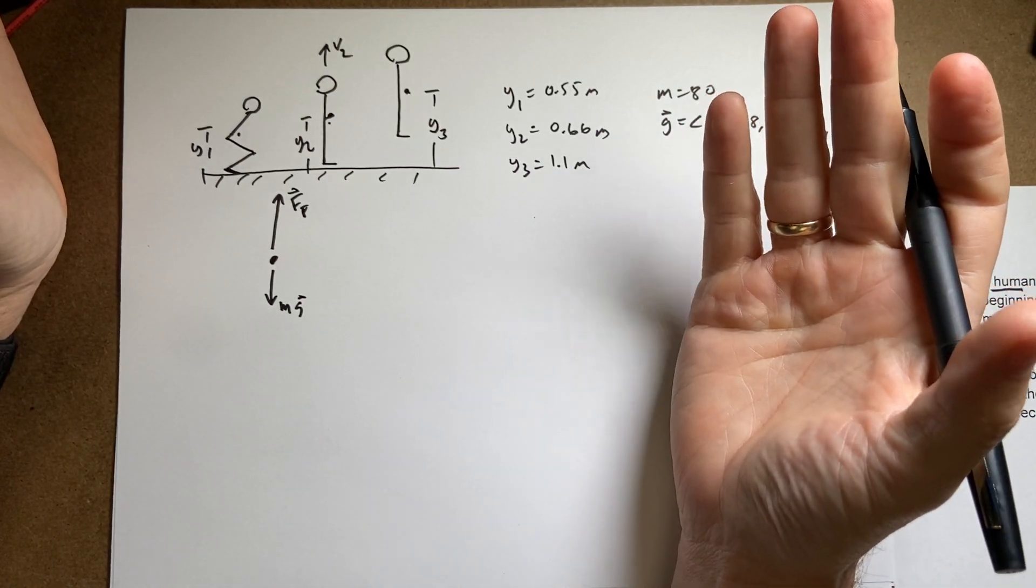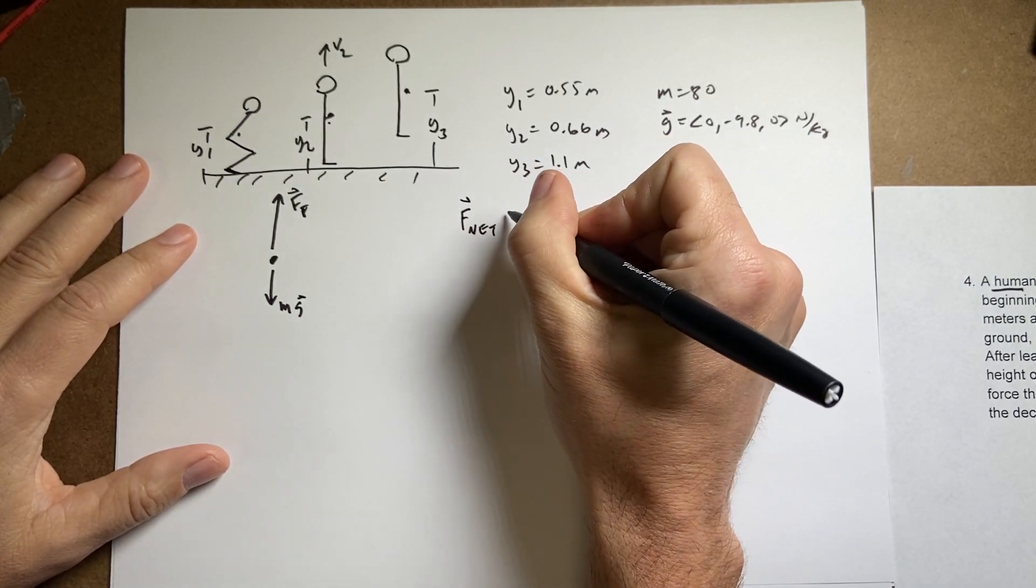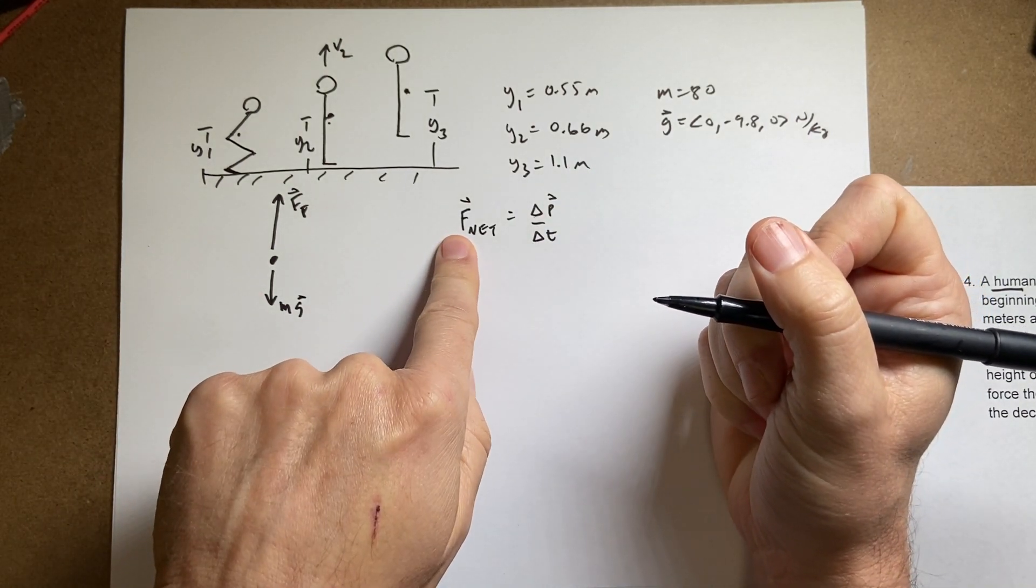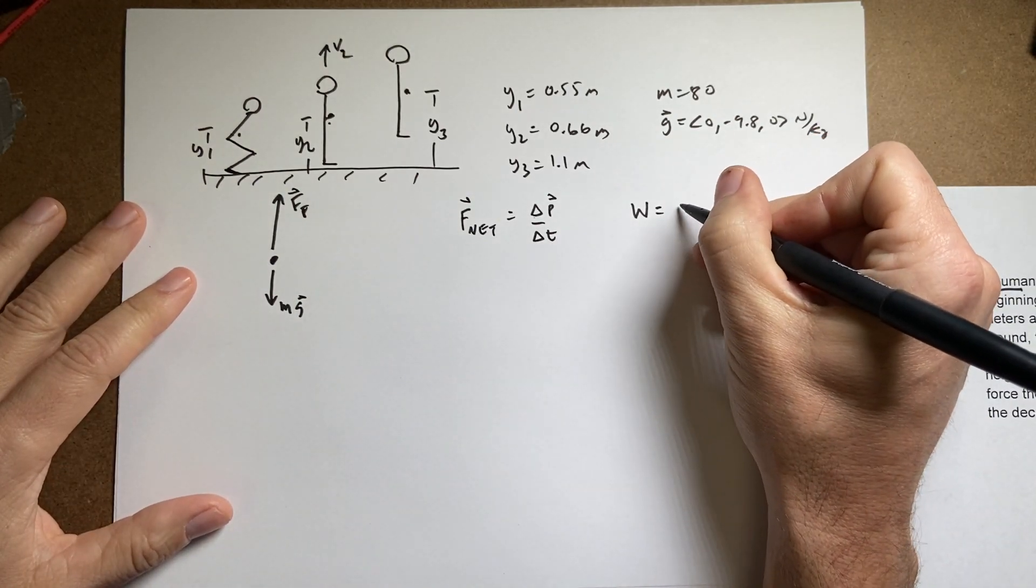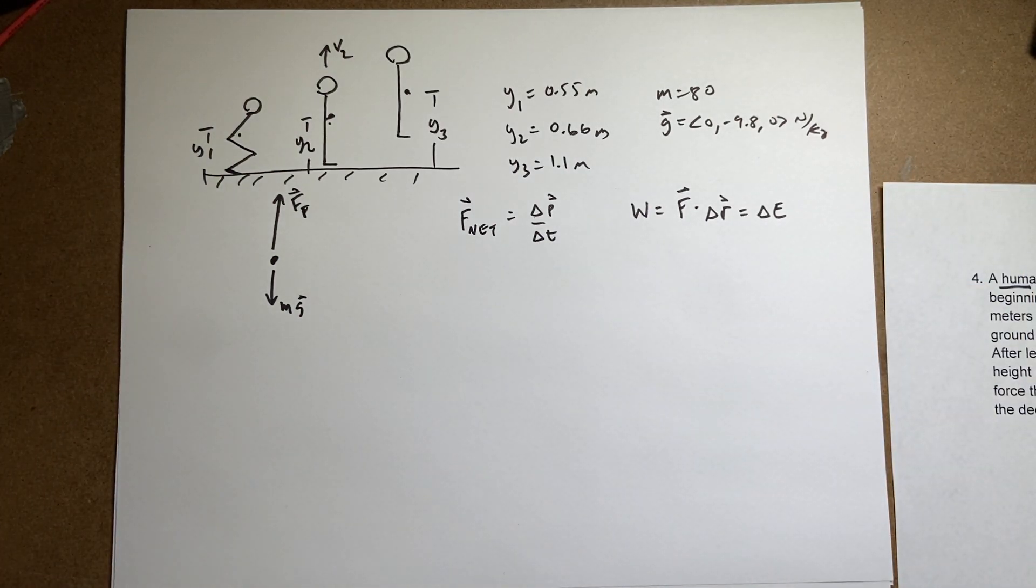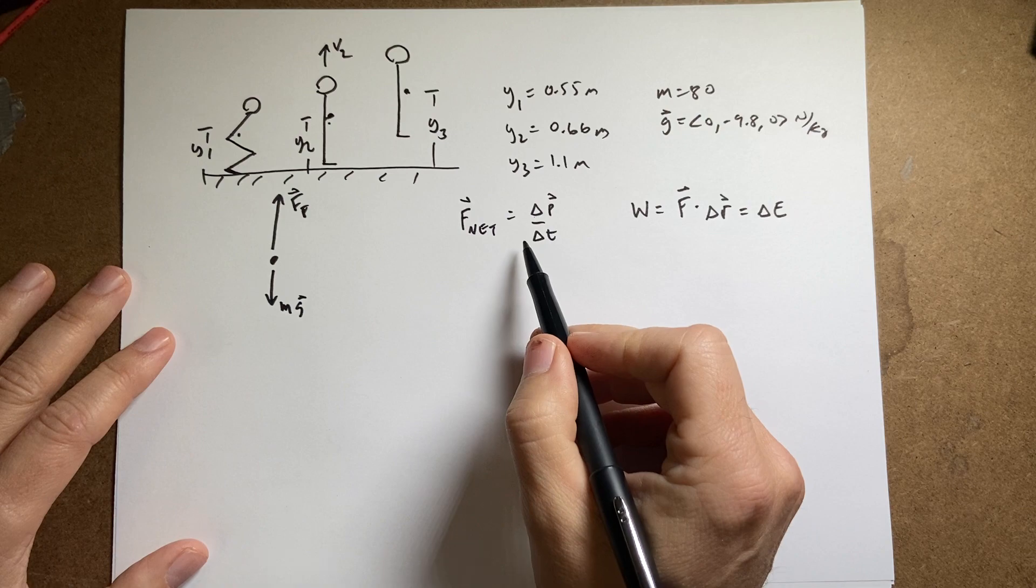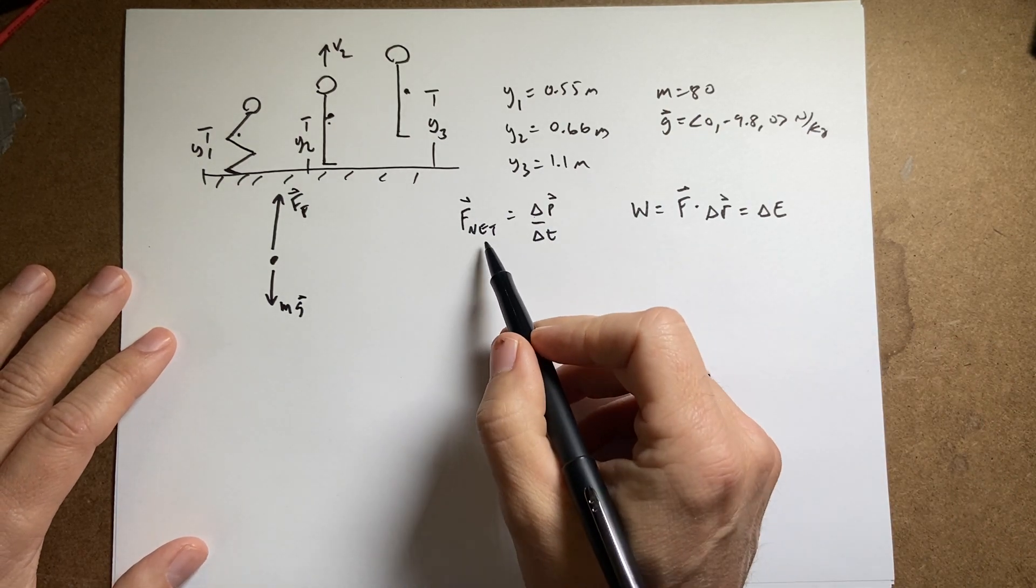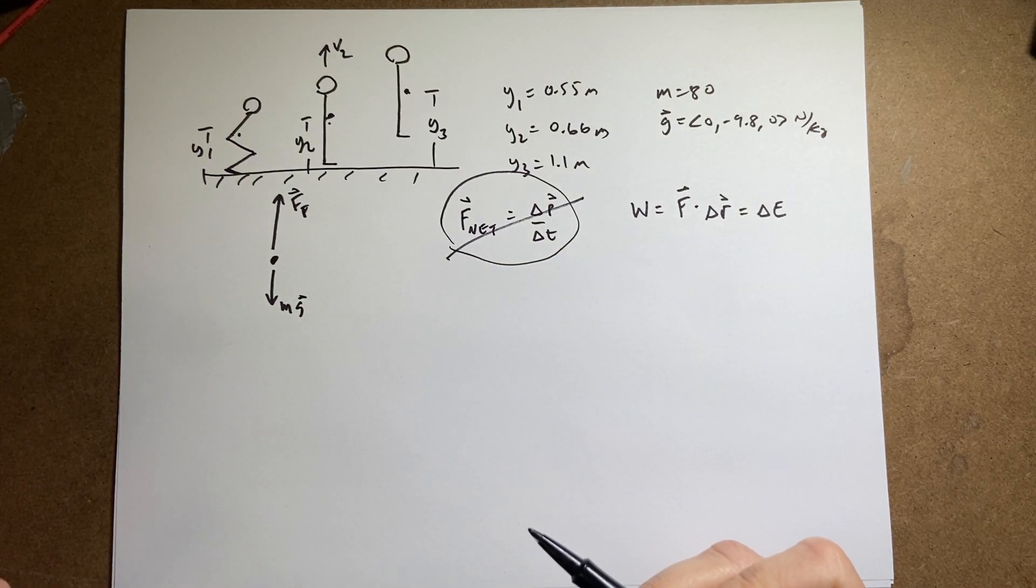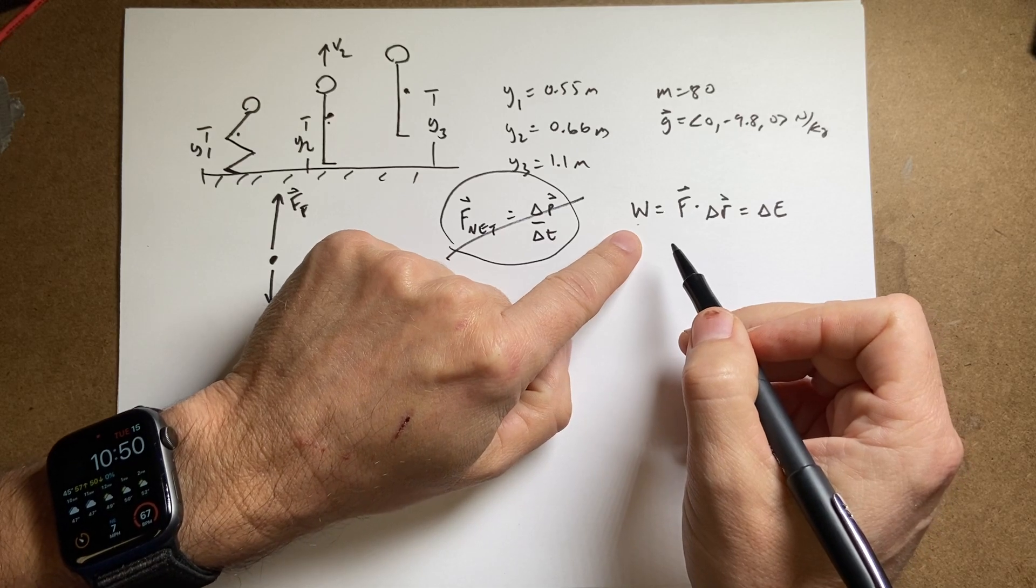So this kind of problem, we have two big ideas. We have momentum principle, f_net is the change in momentum over the change in time. That looks good because we have forces and we're trying to find a force. And then we have the work energy principle. Work equals f dot delta r equals change in energy. And which one should we use? This one deals with time. This one does not. And so I don't want to use this because I don't know the time. I could use it, but it's going to turn out to be a lot more work than I want to. So I'm actually going to use this.